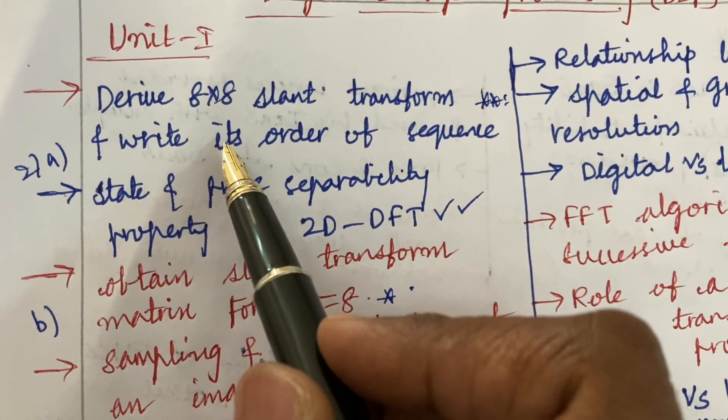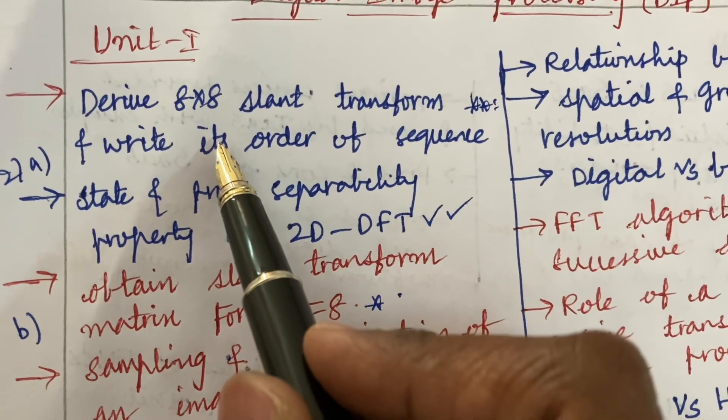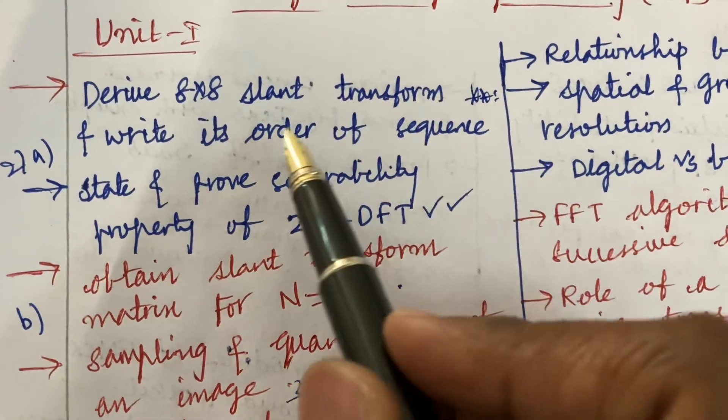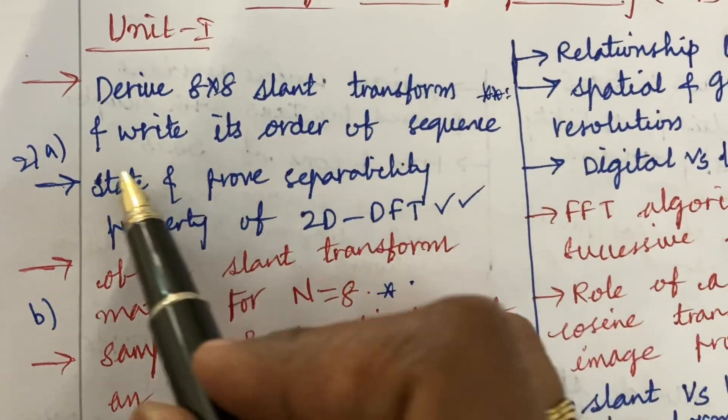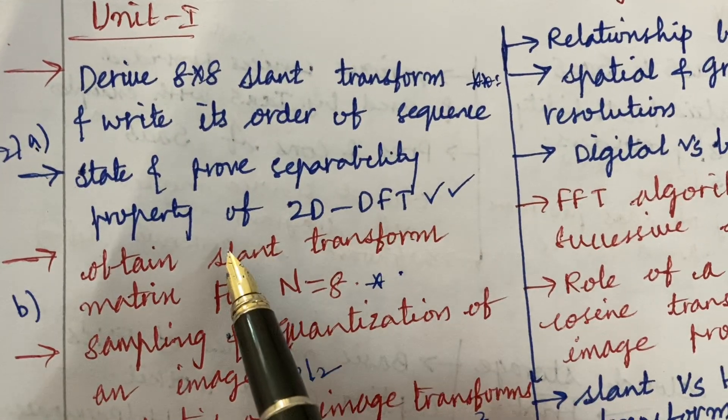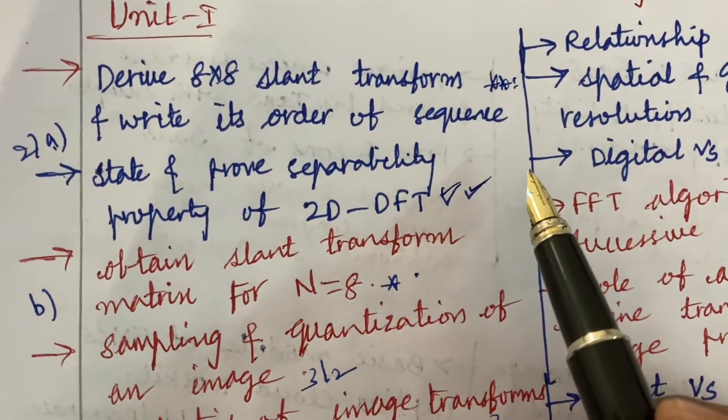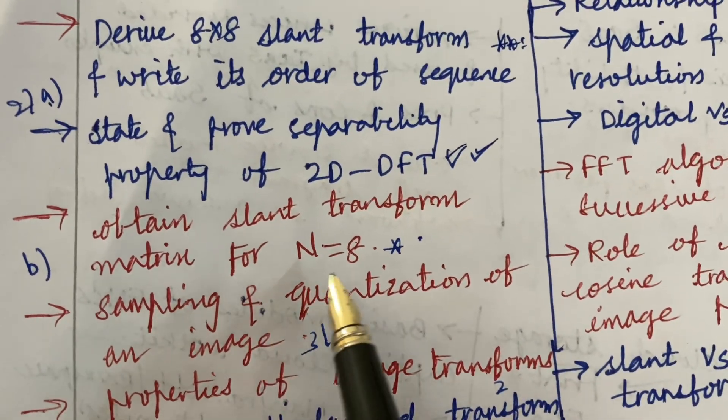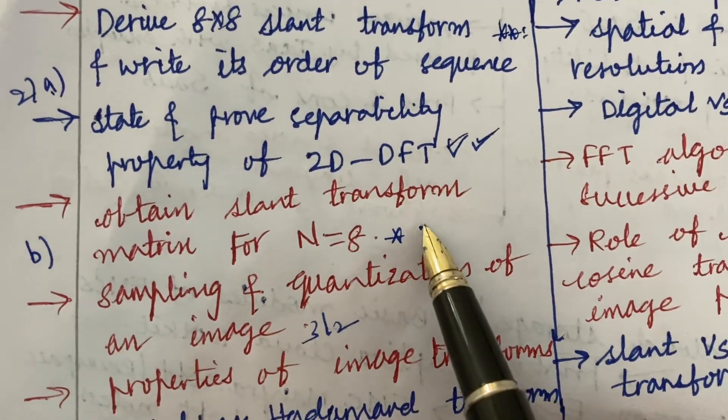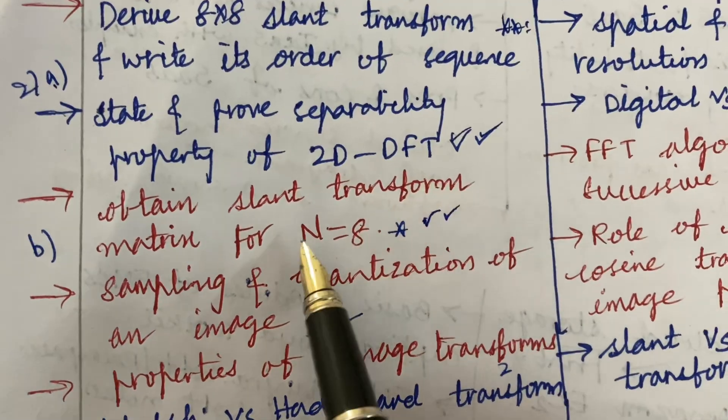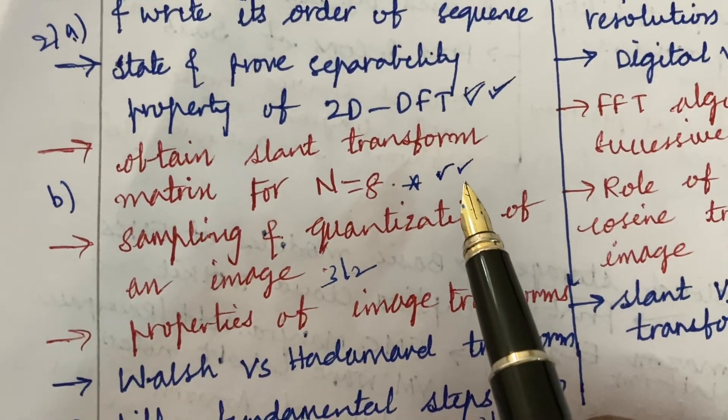The first and foremost gunshot question I can give you from unit one is derive 8 by 8 SLAM transform and write its order of sequence, said to be a two-way question. State and prove separability property of 2D-DFT is also said to be one of the important questions. Ten SLAM transform matrix for N equal to 8 is asked several times and we can expect such type of questions even this time in the question paper.